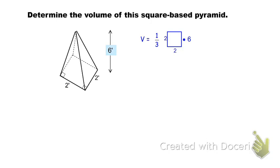Again, one-third the area of the square times the height of 6. To find the area of the square, we multiply base times height, or 2 times 2, or 2 squared. The volume is one-third of 2 times 2 times 6. Computing this, 4 times 6 is 24, and then divided by 3 gives you a volume of 8 cubic feet.